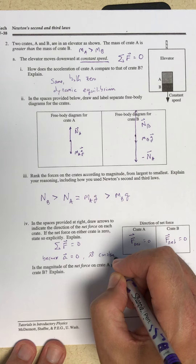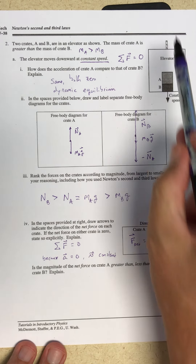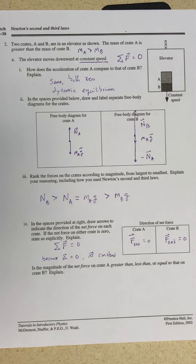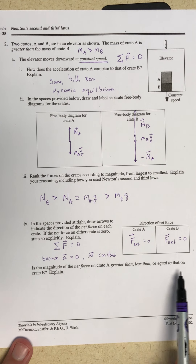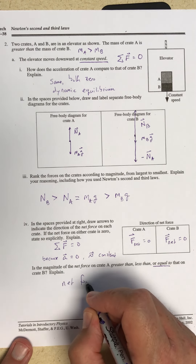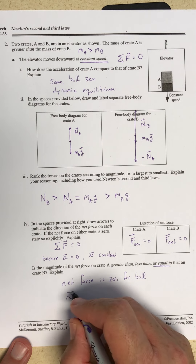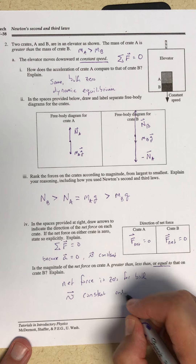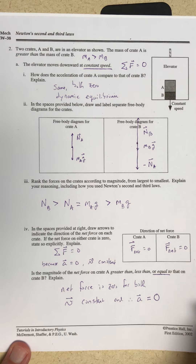The velocity is constant — and just be careful, it does say constant speed, but it's an elevator going up and down, not side to side. So constant speed in a fixed direction means constant velocity. Therefore, the magnitude of the net force on crate A equals that on crate B — both are zero. The acceleration is zero because the velocity is constant, and from Newton's second law of motion, zero acceleration means zero net force.